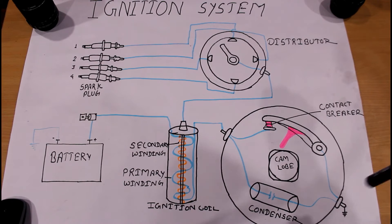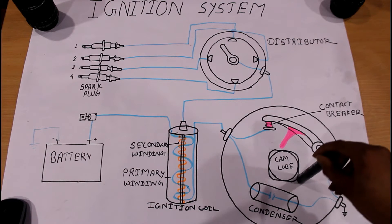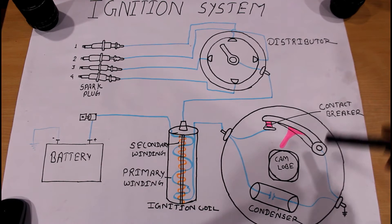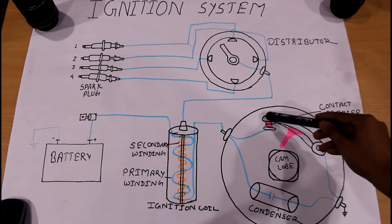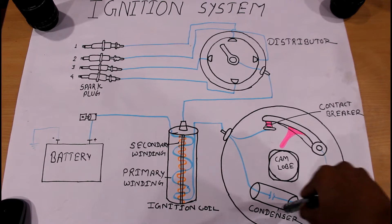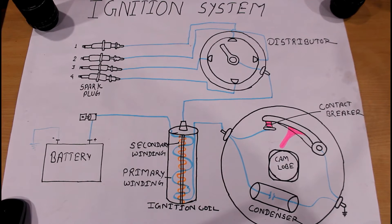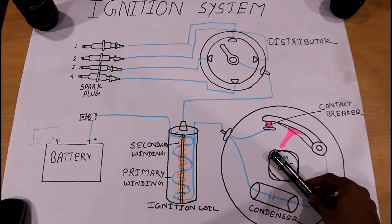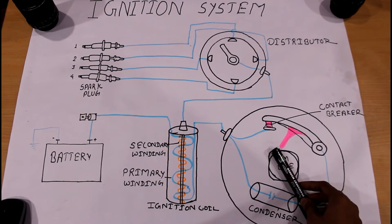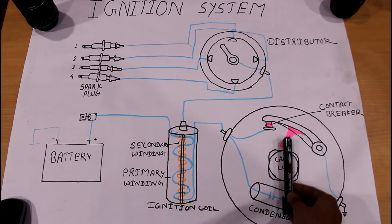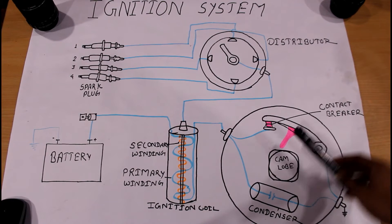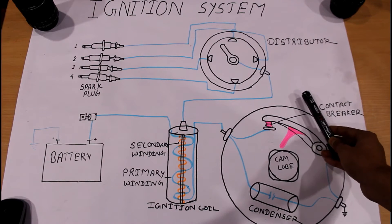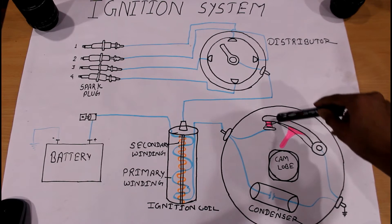In the contact breaker chamber there are three basic parts. The first is a cam lobe, which is directly connected to the crankshaft of the engine. The second is a contact breaker arm, and the third is a condenser. When the engine starts, the crankshaft begins to rotate, and the cam lobe also starts rotating. When the upper side of the cam lobe comes into position, it pushes the contact breaker arm upward and the contact is broken.